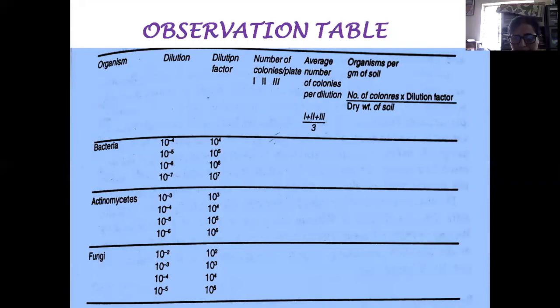The observation table can be made as follows. The organisms are written: bacteria, actinomycetes, fungi and dilution factor is taken in consideration. The number of colonies per plate, the triplicate we have taken. We take all 3 plates results and write the average of the plates and then calculate the organisms per gram of soil. Thus we conclude our result.